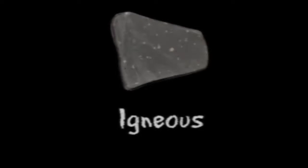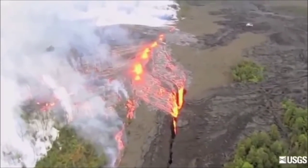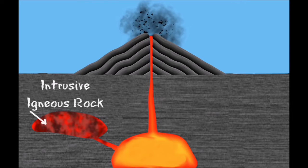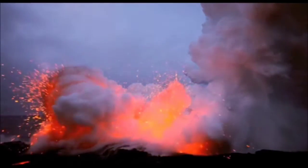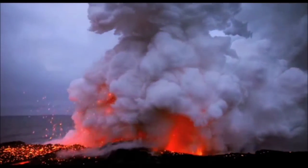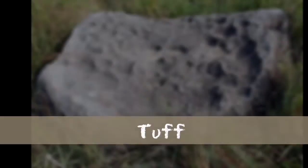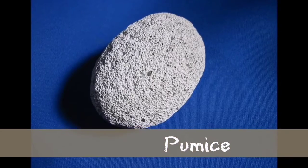The word igneous means fiery. Igneous rocks are formed when magma or lava cools. Sometimes magma cools deep inside the earth's crust, forming intrusive igneous rocks — for example, granite. Other times, lava cools when it reaches the surface during a volcanic eruption, forming extrusive igneous rocks. Examples of extrusive igneous rocks include tuff, obsidian, and pumice.